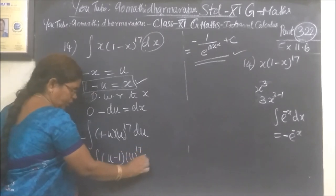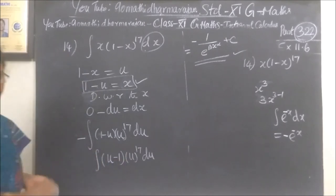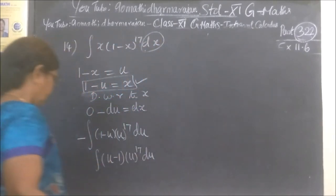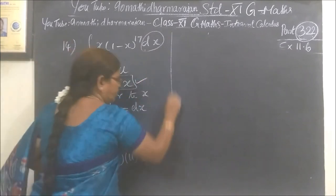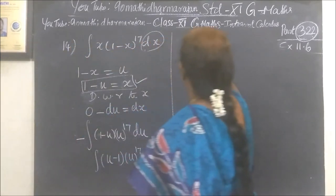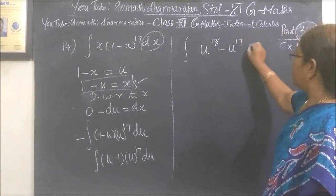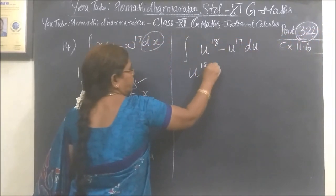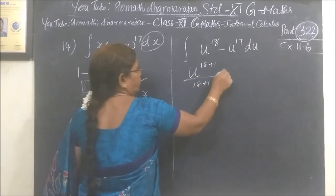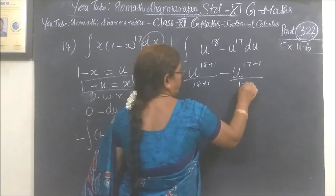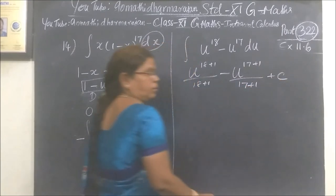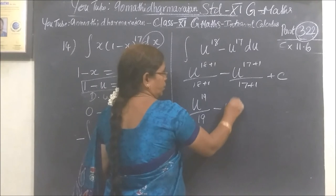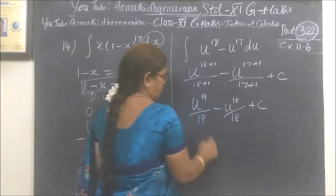Then u power 17. Integral of u power 18 minus u power 17 du. That gives u power 18 plus 1 by 18 plus 1 minus u power 17 plus 1 by 17 plus 1, plus c. Then u power 19 by 19 minus u power 18 by 18 plus c.